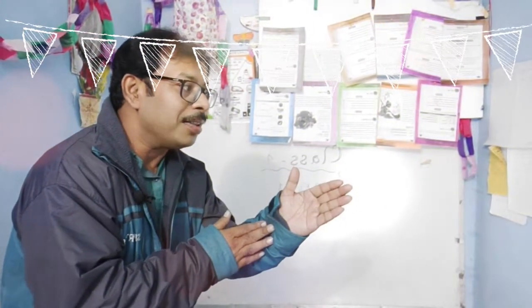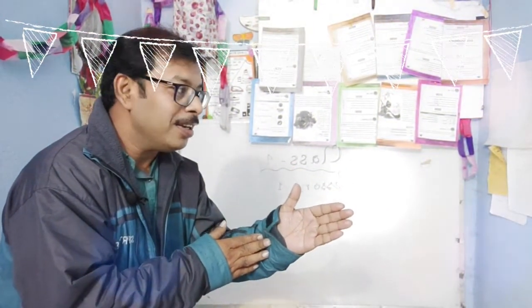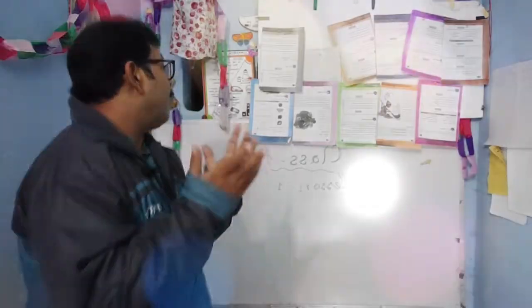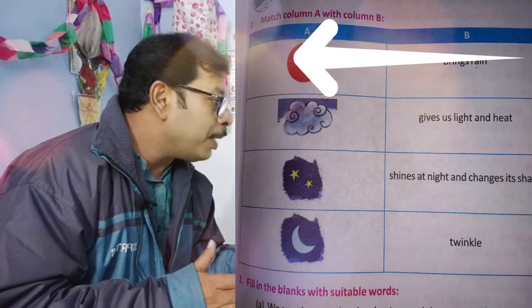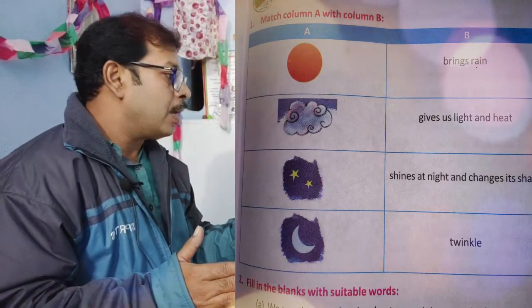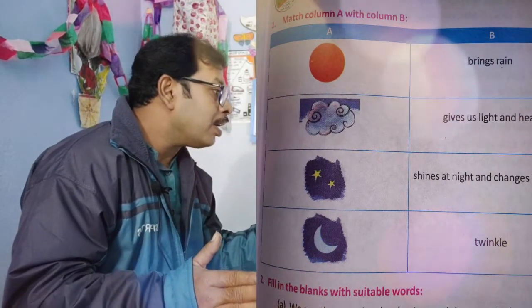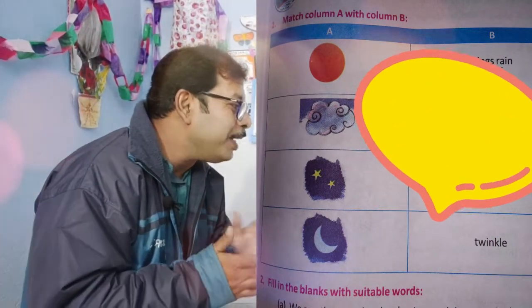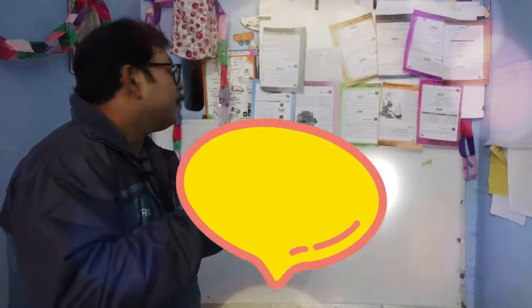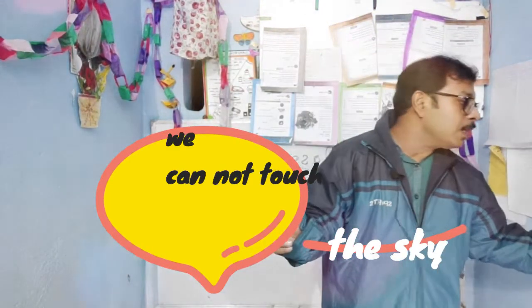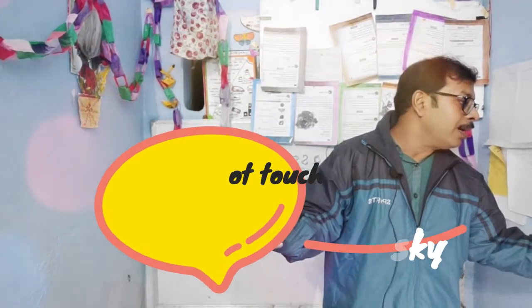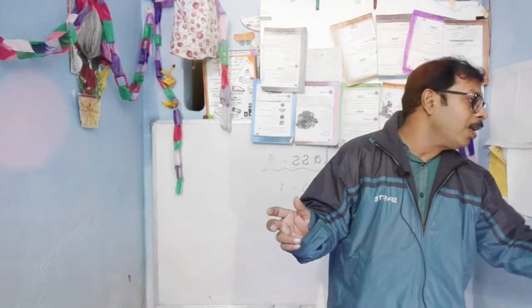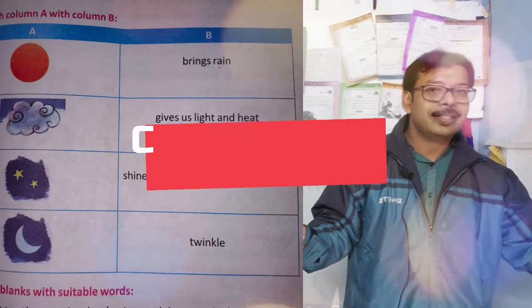So this is a picture of the Sun, then clouds, then stars, then the moon — you have to match them. Now, question number two: fill in the blanks. We see the Sun, the cloud, the stars, the moon in the sky, and we just cannot touch the sky.